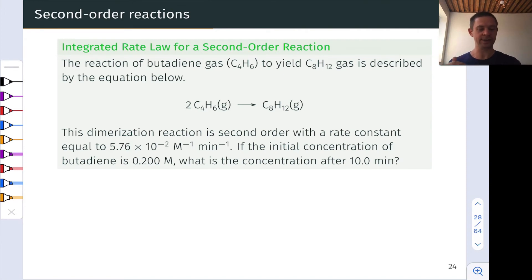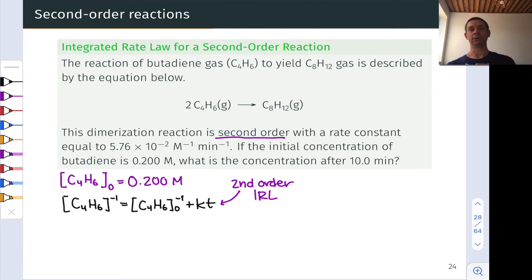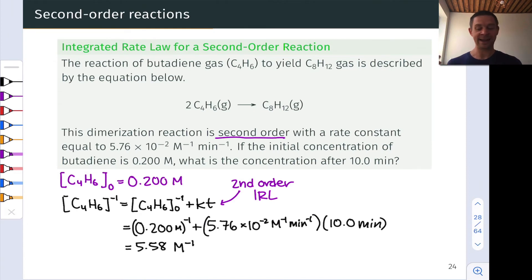Three pieces of information that are key here. So we know, for example, the initial concentration, C4H6, zero, is 0.2 moles per liter. We know the reaction is second order. And so we can write the second order rate law. And here I've used the linearized form, one over C4H6, where C4H6 to the negative one power is the initial concentration to the negative one power plus K times T. And here, note the units of K are per molar, per minute. And so the minute units of time match the minute units in the time we're given. So we can go ahead and plug in everything we know.